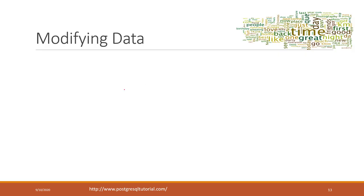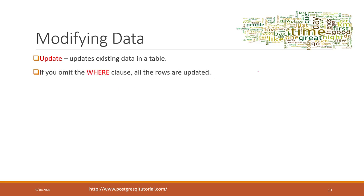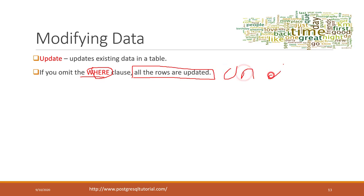Let's continue to see how we can modify tables using UPDATE. When you choose to update your data, make sure you have the WHERE clause. If you don't have the WHERE clause, all the rows will be updated, and again, there is no undo button in relational databases.